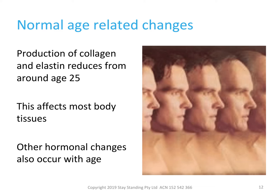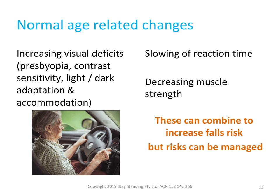We also experience other hormonal changes as we age, and normal age-related changes include increasing visual deficits such as the reduced ability to focus on small print or close objects, which is known as presbyopia; reduced ability to distinguish between fine differences in shades of grey, or the contrast sensitivity of our eye; an increased time for the eyes to adapt between light and dark; and the reduced ability to change focus between near and far objects, which is termed accommodation. Normal age-related hormonal changes and reduced protein production in our tissues can affect our eyesight, our reaction time, and our muscle strength, and these can all combine to increase the risk of falling. So over the course of the Stay Standing program, we'll consider how we can manage these risks.